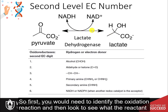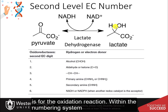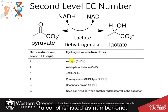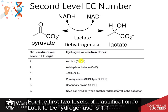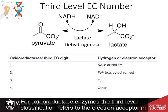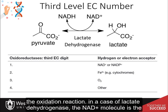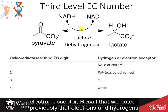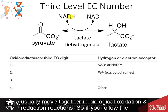The second level of classification for oxidoreductase enzymes corresponds with the electron donor molecule. In the case of lactate dehydrogenase, this is the alcohol, as the oxidation reaction proceeds in the reverse direction. Within the numbering system, alcohol is listed as number 1, so the first two levels of classification for lactate dehydrogenase are 1.1. The third level of classification refers to the electron acceptor in the oxidation reaction.